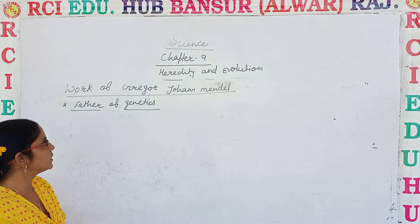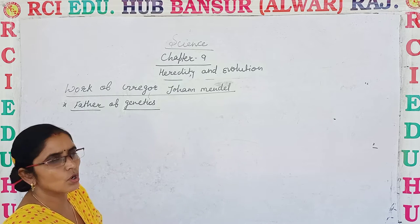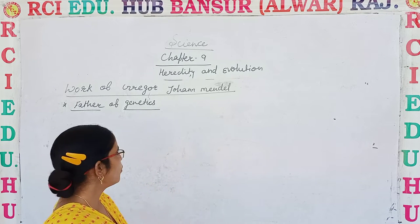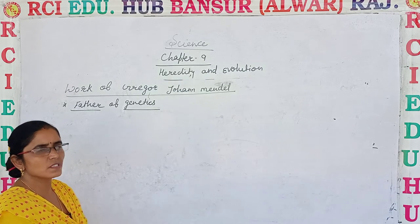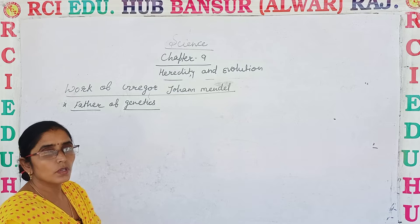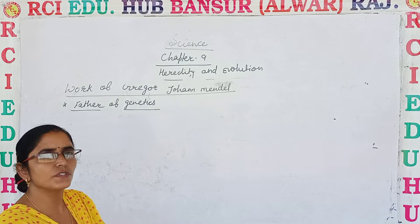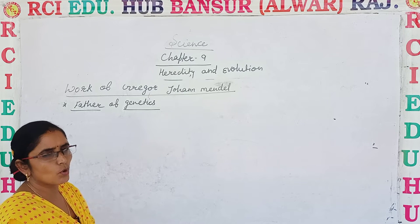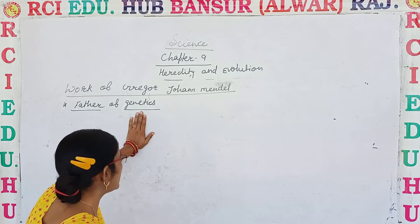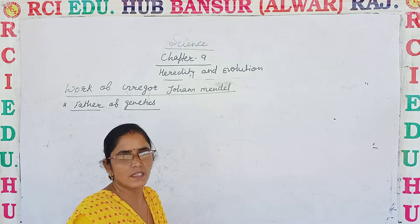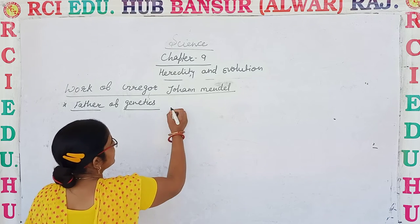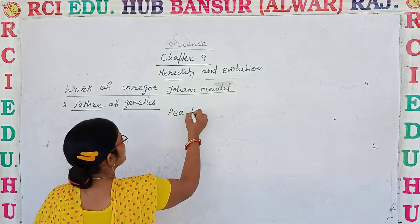Now let's discuss the work of Gregor John Mendel. He was a very famous biologist, and he did a lot of special work. He is considered as the father of genetics, and he also developed modern genetics. He worked as a monk, as a priest in a church, and he worked on the pea plant.